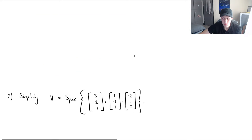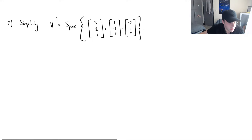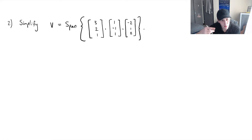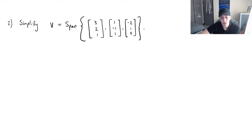The next question says: simplify V, which is the span of these three vectors. I wanted to start with an easier example to understand the fundamentals. But what about an example where it's more difficult to see? You can't always just look at vectors and immediately think of a linear combination. What if they involve ugly fractions? So there's got to be a better procedure to figure this out.